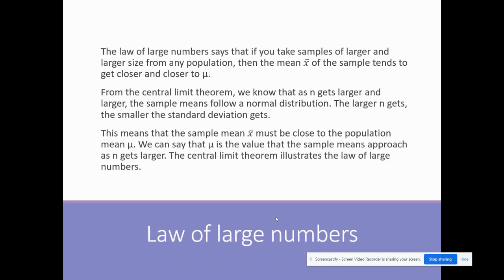The law of large numbers says that if you take samples of larger and larger size from any population, the mean of those samples tends to get closer and closer to the population mean. So if I keep sampling something over and over again from the same population, I'm going to get closer and closer to that true population mean. From the central limit theorem, we know that as N gets larger and larger, the sample means are going to follow the normal distribution. The larger N gets, the smaller the standard deviation gets. This means the sample mean X-bar must get close to the population mean. So the central limit theorem illustrates the law of large numbers.